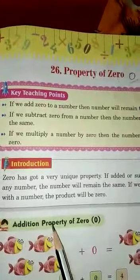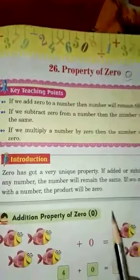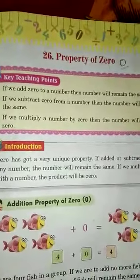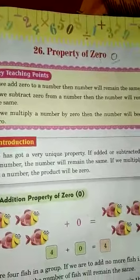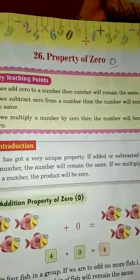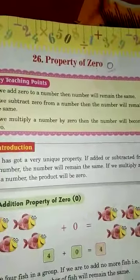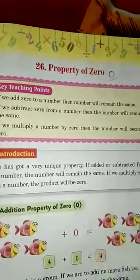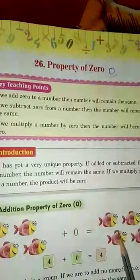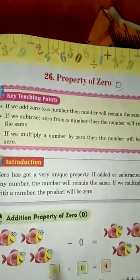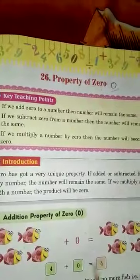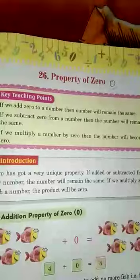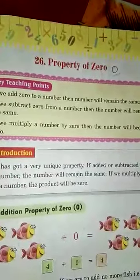See here, addition property of 0. We can see there are 4 fish in a group. If we are to add no more fish, that is if we add 0 fish to the group, the number of fish will remain the same. See, 4 plus 0 equals 4. Hence, if 0 is added to any number, the number will remain the same.